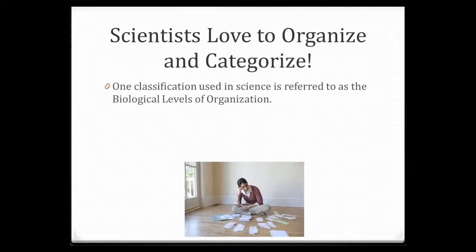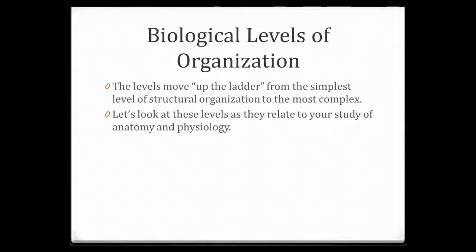One of the things we know is that scientists love to organize things and put them in categories to classify those things. So one classification used in science is called biological levels of organization. We're going to start at the smallest structure that we can study and move up to the most complex — basically looking at it as moving up a ladder, in particular as it relates to human anatomy and physiology.